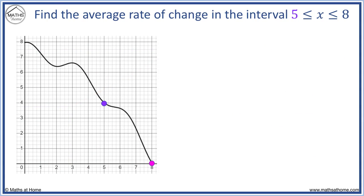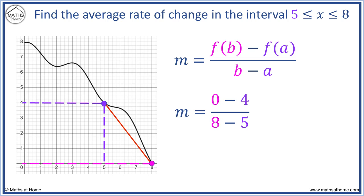In this example, we find the average rate of change from five to eight. At A equals five, f of A equals four. At B equals eight, f of B equals zero. We get zero minus four over eight minus five. This gives us minus four over three, and minus four divided by three is approximately minus 1.3 recurring.